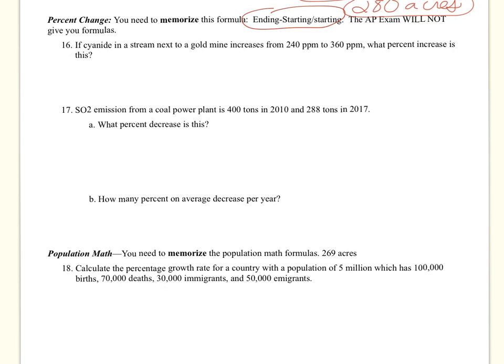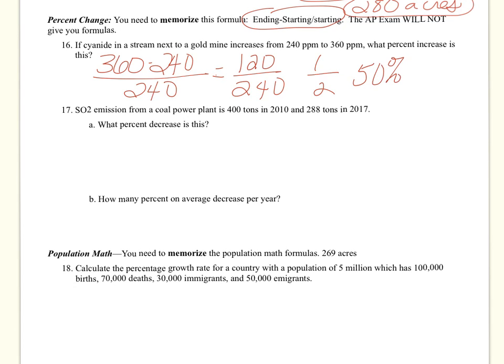If cyanide in a stream next to a gold mine increases from 240 parts per million to 360 parts per million, what percent increase is this? So we're going to do our ending number, which is 360, minus our starting, which is 240, divided by our starting. So this comes out 360 minus 240 is 120, divided by 240. You can really see that 120 is half of 240. So we're going to say it's a 50% increase because a half is 50%.